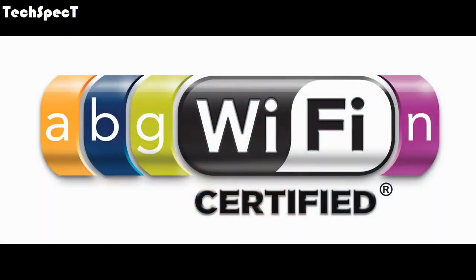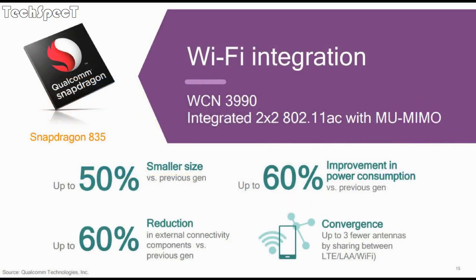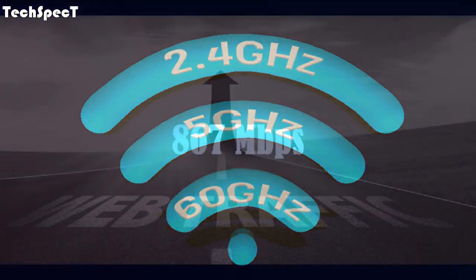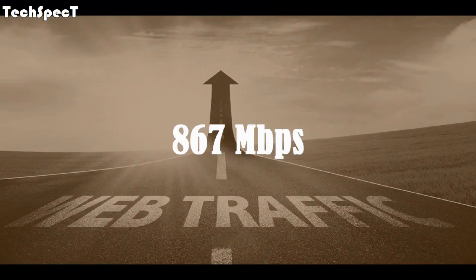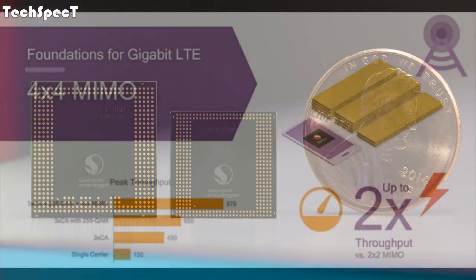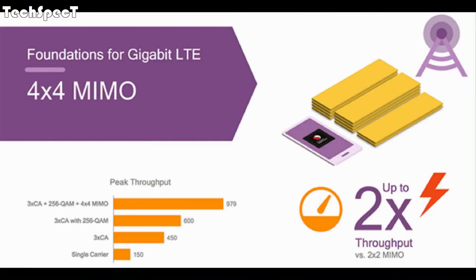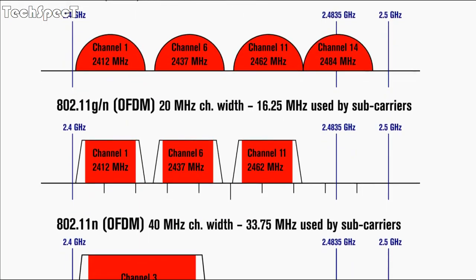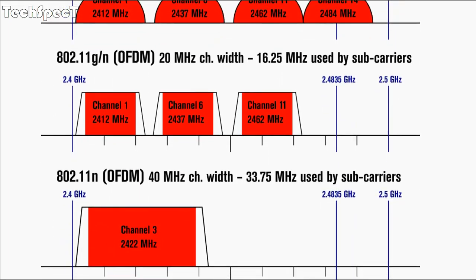Wi-Fi Standards: 802.11ad, 802.11ac Wave 2, 802.11n, 802.11a, b, g. Wi-Fi spectral bands: 2.4 GHz, 5 GHz, 60 GHz. Peak speed: 867 megabits per second. Channel utilization: 20, 40, or 80 MHz. MIMO configuration: 2x2, 2-stream. Wi-Fi features: MIMO, Multi-Gigabit Wi-Fi, Dual Band Simultaneous (DBS), Integrated Baseband.